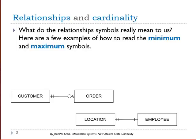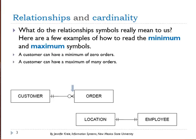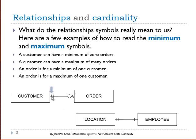What do the relationship symbols that depict cardinality really mean for us? In the first example, looking at the relationship of customer to order, a customer can have a minimum of zero orders. This means we might store data about a customer even though they have not placed an order with us. A customer can have a maximum of many orders — that is the crow's foot notation. An order is for a minimum of one customer; you can't have an order without a customer. An order is for a maximum of one customer.